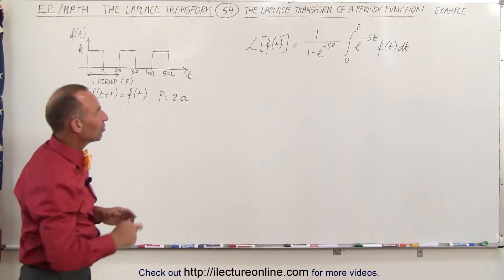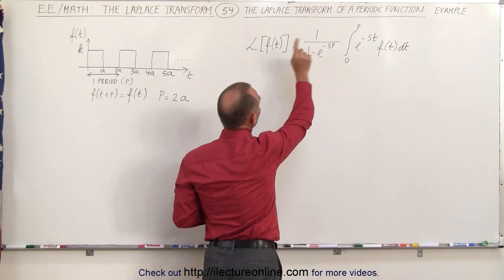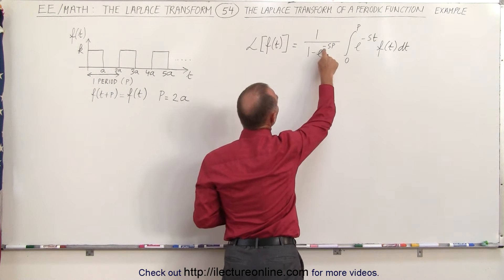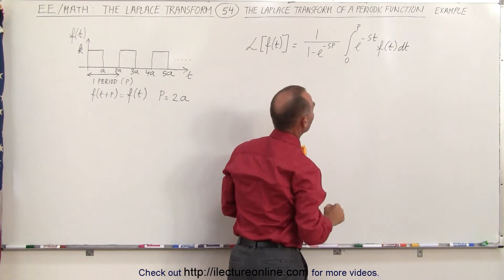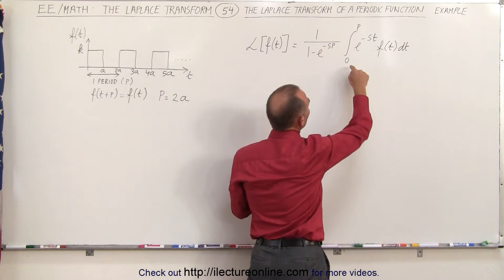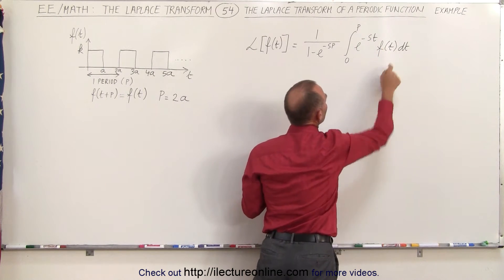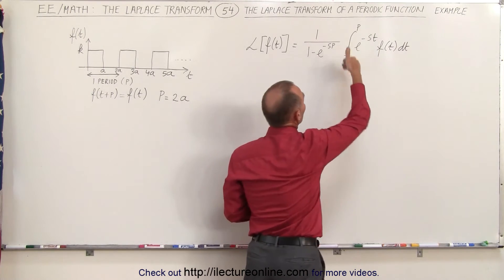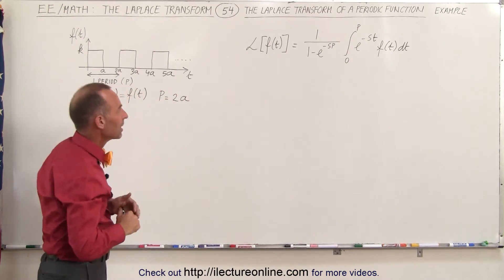We've drawn the general equation on the board. We know that the Laplace transform when f(t) is a periodic function is equal to 1 divided by 1 minus e to the minus sp, where p is the period — the length of the period in time. The general equation says we integrate from 0 to the end of the period of e to the minus st times f(t) dt. Notice we did not use the dummy variable because in the limits we don't have a time, we just have p, the constant.